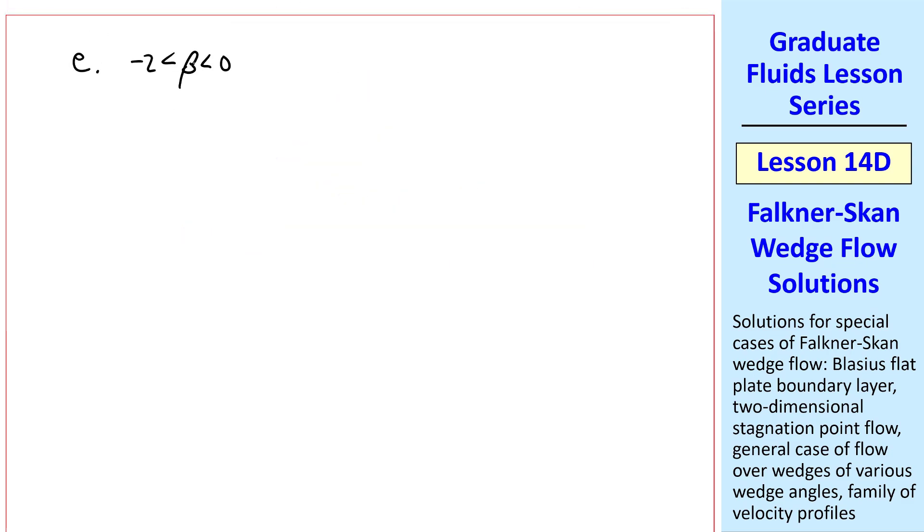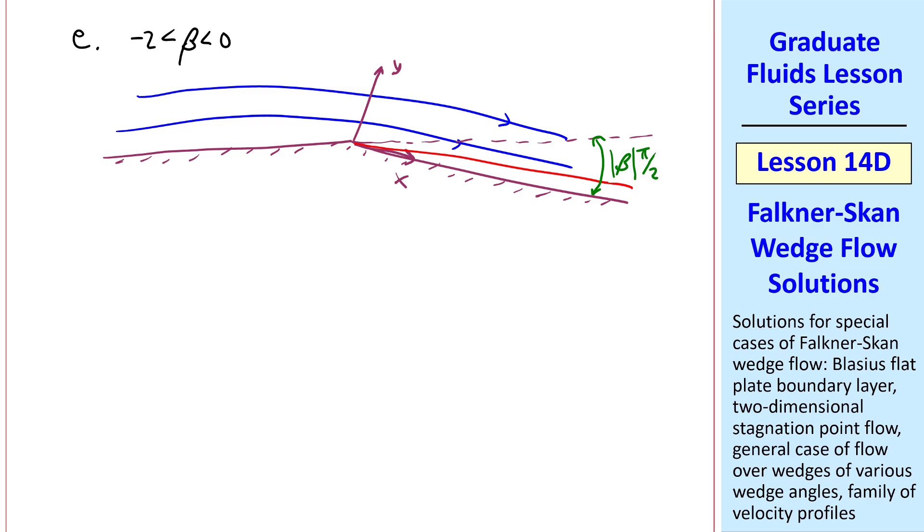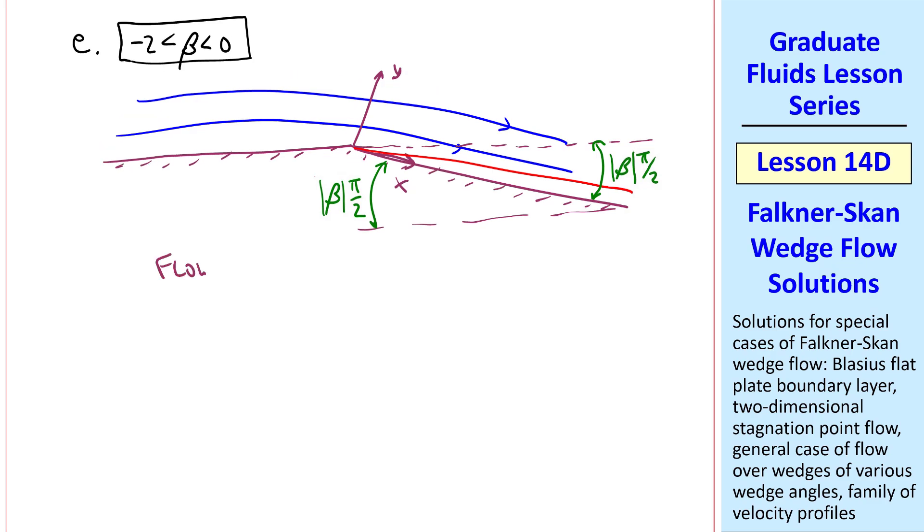What about negative beta? Suppose beta goes between negative 2 and 0. It turns out that this corresponds to flow along a wall that suddenly drops downward, and the streamlines move something like that. Again, x is along this wall, and the boundary layer grows along that wall like this. If I continue this horizontal line from upstream, this angle becomes absolute value beta pi over 2, which from our trig class, since these are parallel lines, this angle is also absolute value beta pi over 2. This is thus flow over an expansion corner of angle absolute value beta pi over 2. And unlike our other cases, where the origin was a stagnation point, there is a singularity at this origin, where capital U is infinity.